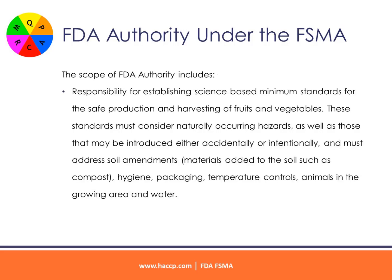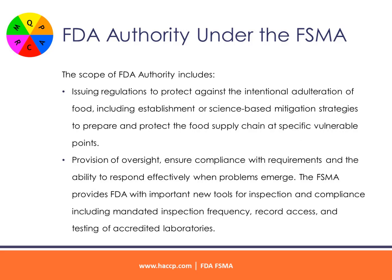The scope of FDA authority includes responsibility for establishing science-based minimum standards for the safe production and harvesting of fruits and vegetables. These standards must consider naturally occurring hazards as well as those that may be introduced either accidentally or intentionally, and must address soil amendments such as compost, hygiene, packaging, temperature controls, animals in the growing area, and water. This also includes issuing regulations to protect against the intentional adulteration of food, including establishment of science-based mitigation strategies to prepare and protect the food supply chain at specific vulnerable points.